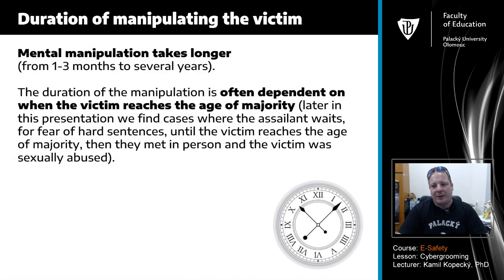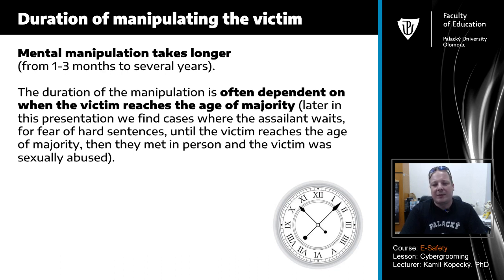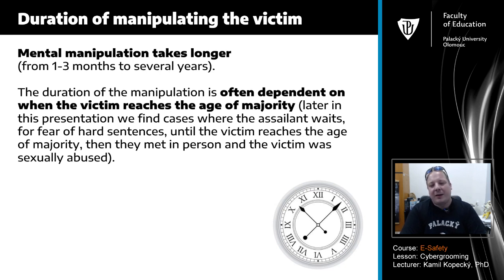Regarding the duration of manipulating the victim — the mental manipulation takes longer, from one to three months to several years. The duration of the manipulation is often dependent on when the victim reaches the age of majority. In some cases the assailant waits, for fear of harsher sentences, until the victim reaches the age of majority and then they meet in person and the victim is sexually abused.